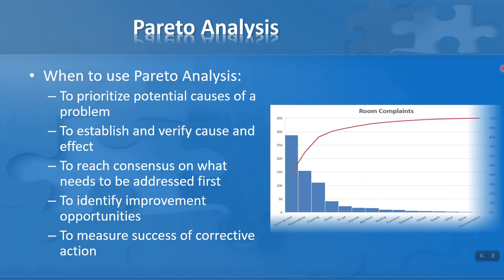So when do we use Pareto analysis? We want to use it to prioritise potential causes of a problem. We use it to establish and verify the cause and effect of a problem — we need to really understand where the problems are coming from. And it also helps us reach a consensus on what needs to be addressed first. This then leads us to identify improvement opportunities, and we can also use it to measure the success of corrective action.